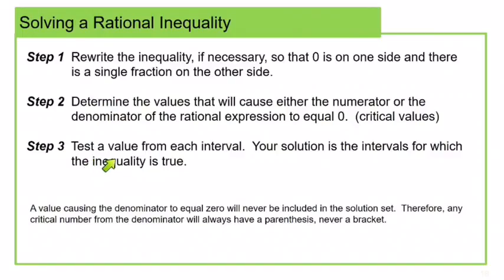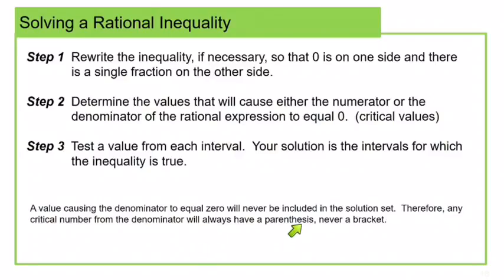Just like last time with quadratic inequalities, we will choose a test value from each interval and test just like we did before. One thing to keep in mind is that any value that causes the denominator to equal zero will never be included in the solution set because it makes the left side undefined instead of making it equal zero. Therefore, any critical number from the denominator will always have a parenthesis and never a bracket.